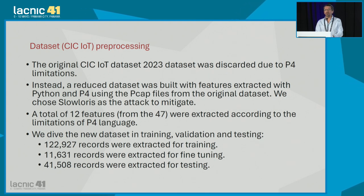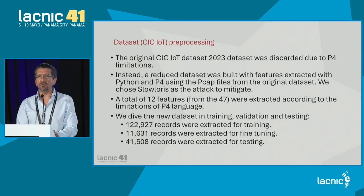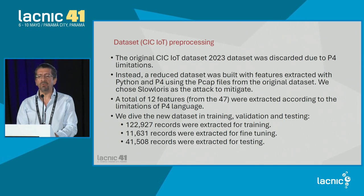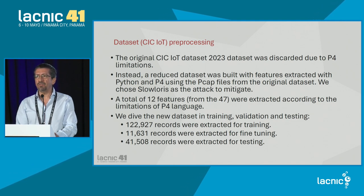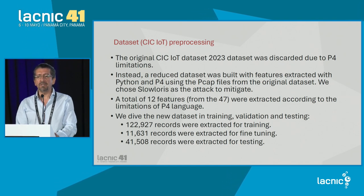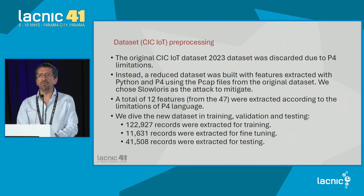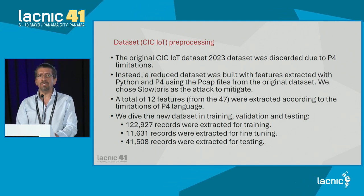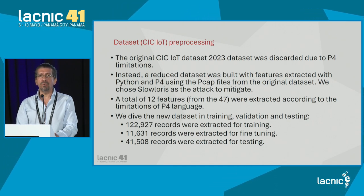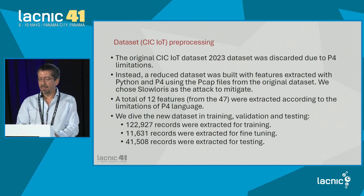These 12 features can be captured and processed directly through P4 in a switch in the data plane or in a software-defined network. This led us to create our own dataset to train the AI models. The dataset was divided into three sections: 122,000 records for training, 11,000 records for fine-tuning or validation, and approximately 41,000 records for testing accuracy on traffic never seen before.